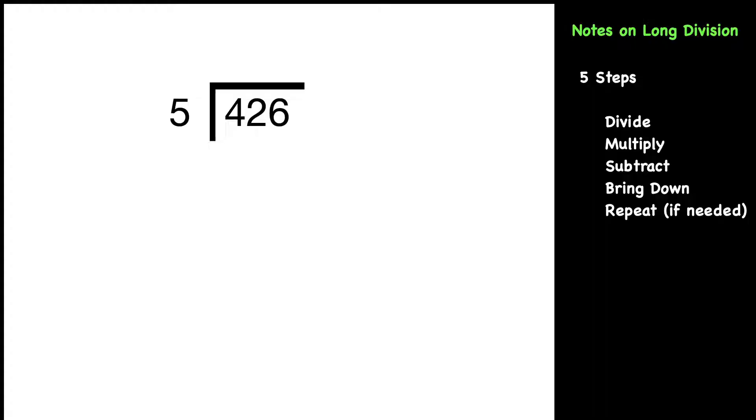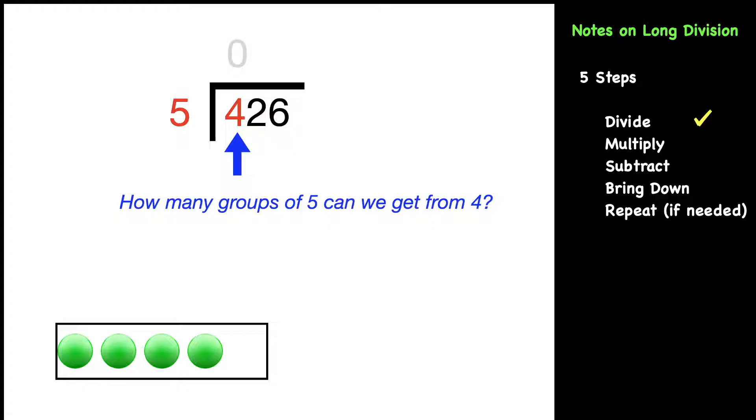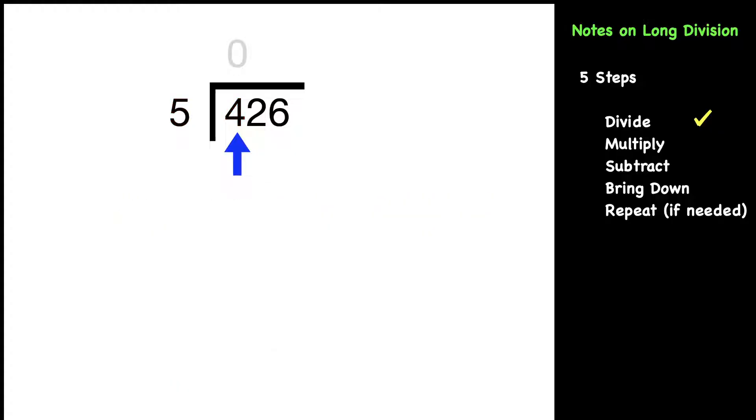So let's start with our first step for 426 on the screen divided by five. We start with divide. When we divide, we go digit by digit from left to right. So in other words, we are going to start with the four and ask yourself, how many groups of five can we get from four? The answer to that is zero and that zero goes right on top of the four. Now, if you are not sure why we got zero, let's just look at a model. If you had four Skittles, can you get five Skittles from that? No, because there is only four. So that is why we have a zero up there.